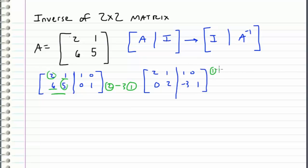And now we can take this first row and divide by 2 to get a 1 in this position. And when we do that we get another row equivalent matrix which is 1, 1 half, 1 half, 0 and 0, 2, negative 3, 1.